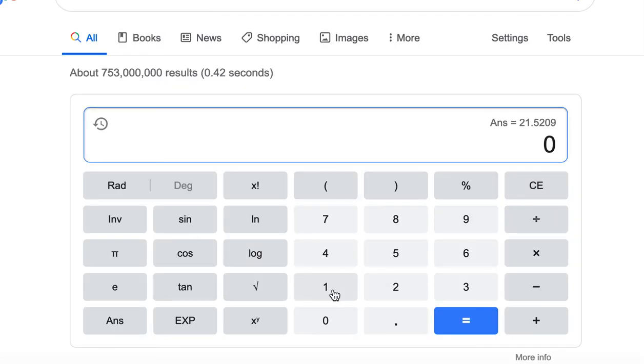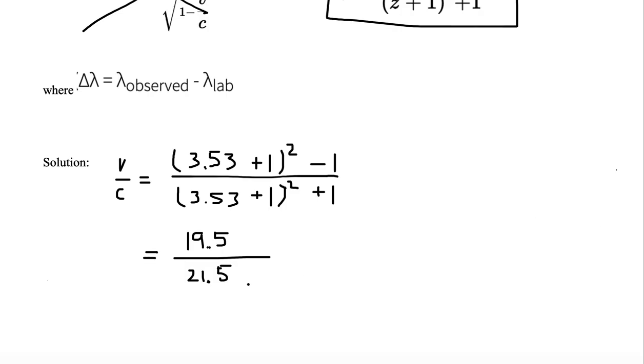So now we need 19.5 divided by 21.5. So we'll hit clear. 19.5 divided by 21.5 equal to. And we have 0.9069. We only want 2 digits. So let's round the 0 to 1 because the 6 is greater than 5. So it's 0.91. Now this makes much more sense.